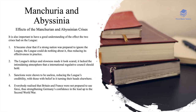The effects of both crises were important. Firstly, it became clear that if a strong nation was prepared to ignore the League, the League could essentially do nothing about it, thus reducing its effectiveness in practice. The League's delays and slowness also made it look scared, as it lacked the intimidating authority an international regulatory council should hold if countries are to respect it. Furthermore, sanctions were shown to be quite useless, reducing the League's credibility, and everybody realised that Britain and France were not prepared to use force, thus strengthening Germany's confidence in the lead-up to the Second World War.